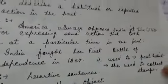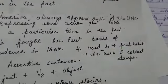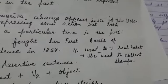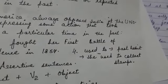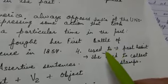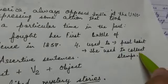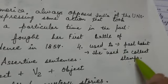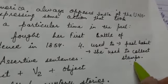Now next is the main word 'used to'. 'Used to' word hum tabhi use karte hain jab hamne apni past ki habit ko show karna ho. For example, 'She used to collect stamps.' Uski kya habit thi? Woh kya collect karti thi? Stamps.